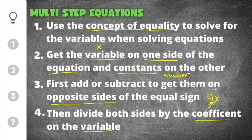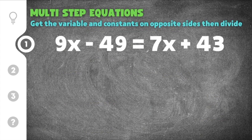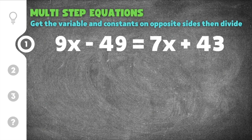Let's jump down to our first practice problem on multi-step equations. This problem gives us 9x minus 49 equals 7x plus 43. We're using the concept of equality to get all the variables on one side and all the constants on the other. The first thing we're going to do is add or subtract to get all the variables together, and the second thing is add or subtract to get all the constants together. I have 9x here and 7x here — they're on opposite sides of the equal sign.